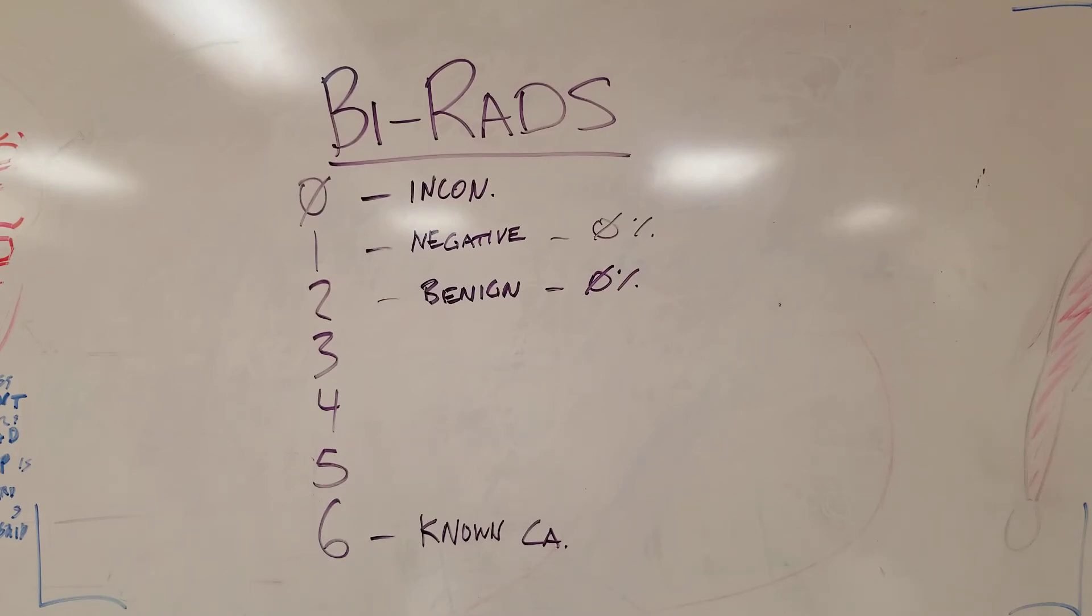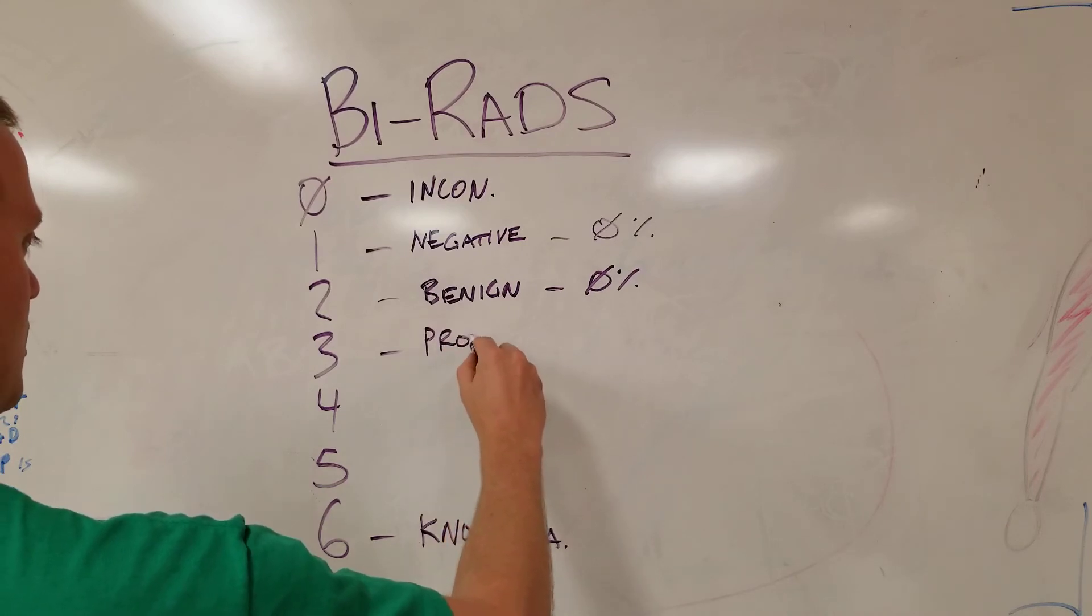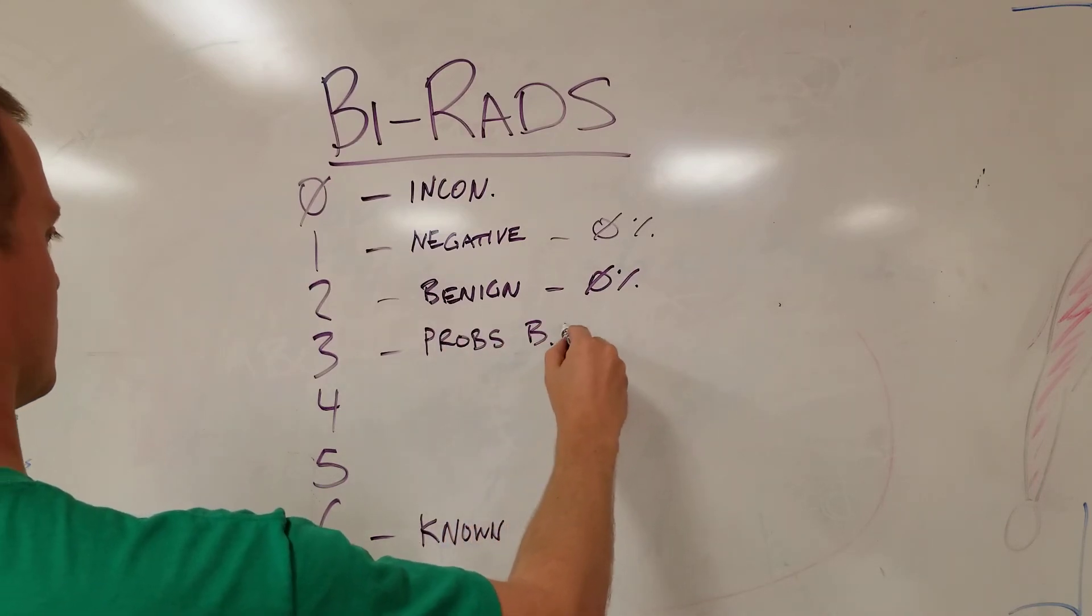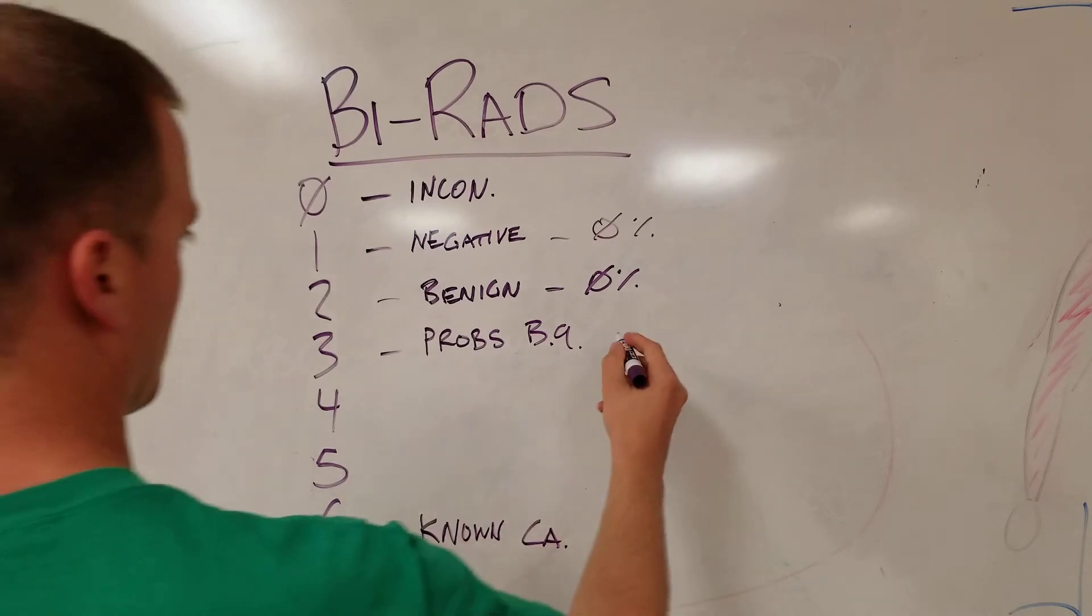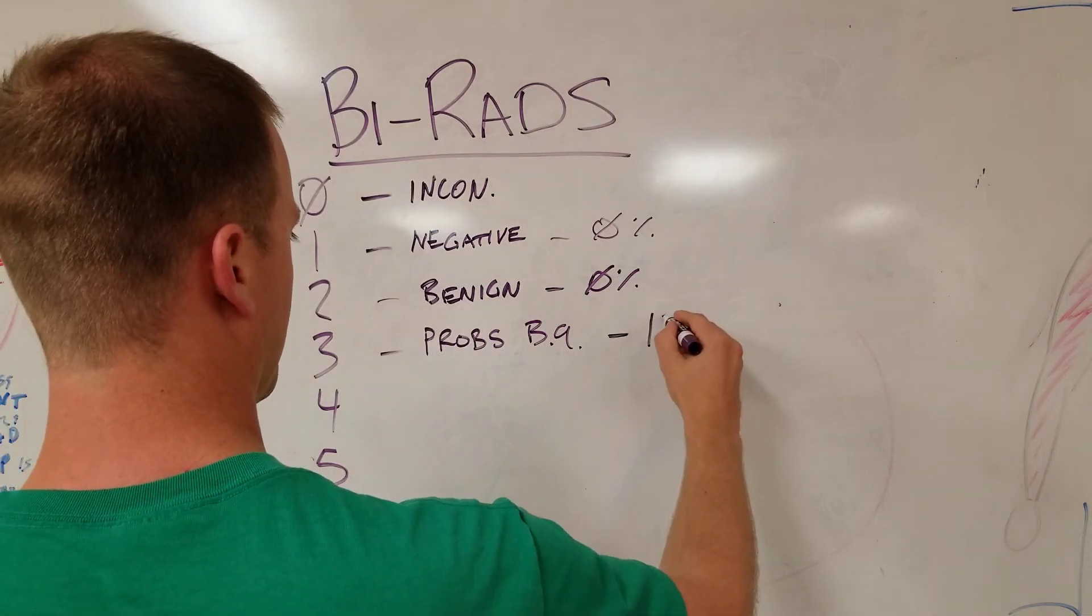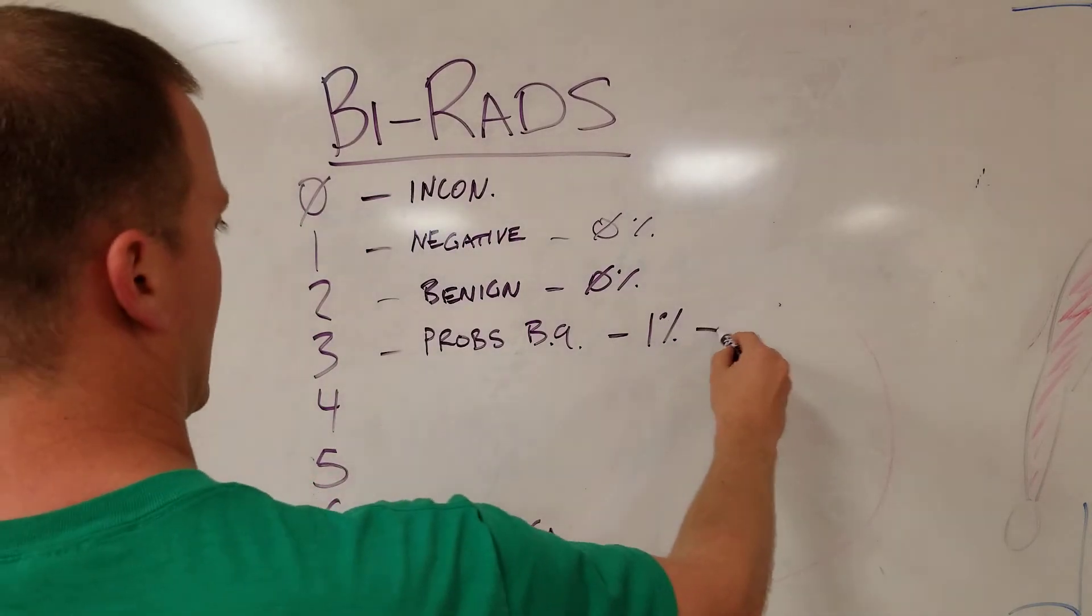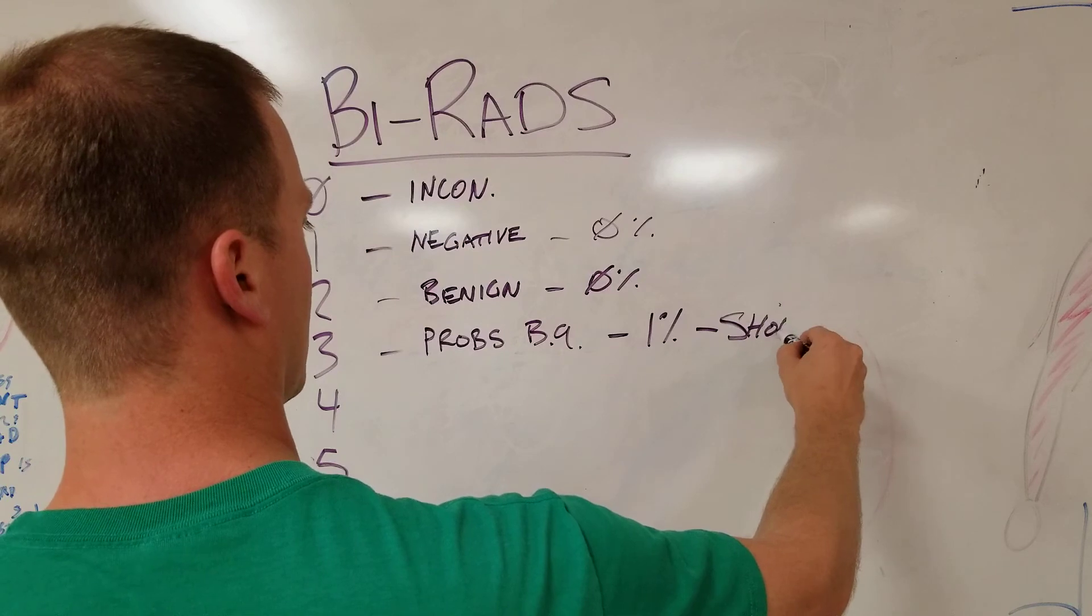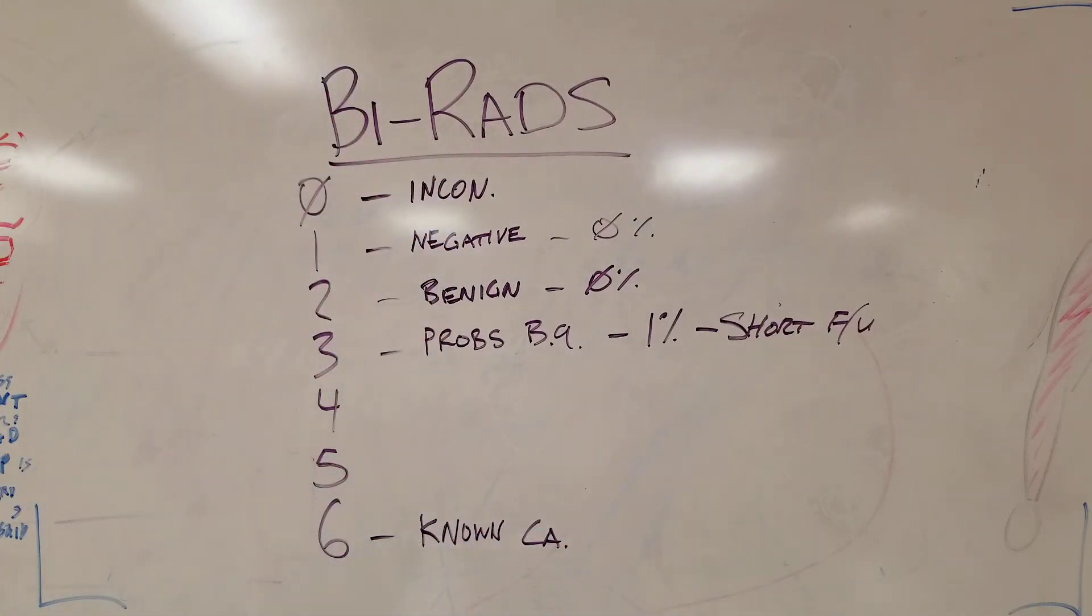Three is another point to remember because this is another takeoff point. This is probably benign, and this does carry a little bit of a risk for some sort of malignancy—very small, about one to two percent. What you do with this is you need to have a short follow-up. We need to repeat our mammogram in the next six months and make sure that this BI-RADS 3 can either be downgraded to a BI-RADS 2 or upgraded to a BI-RADS 4.